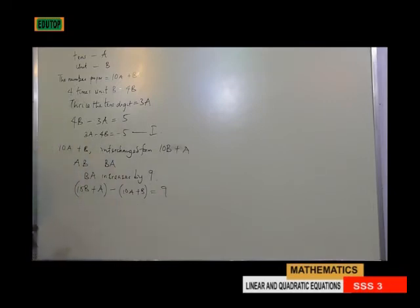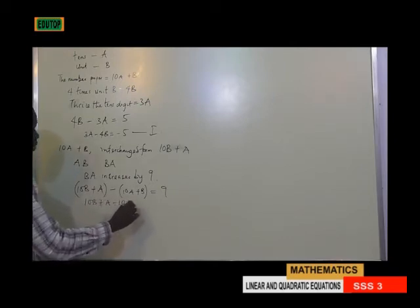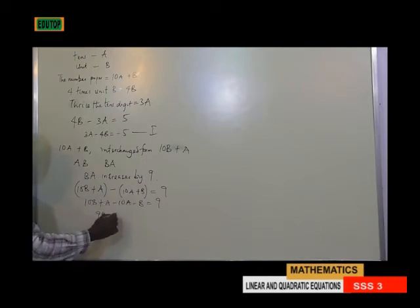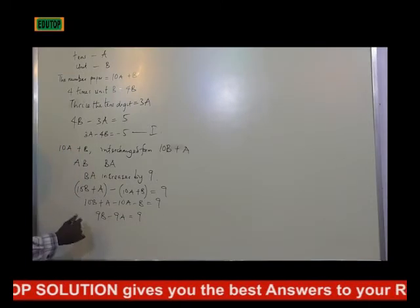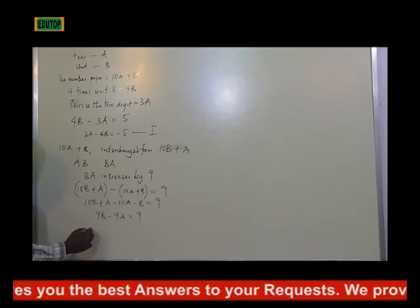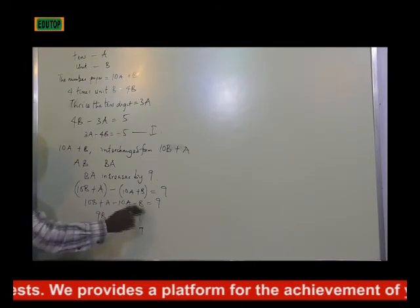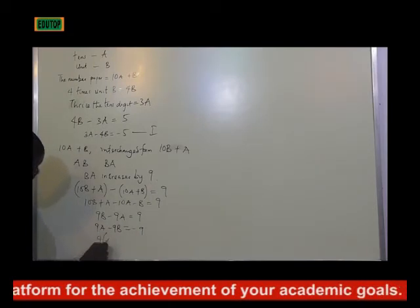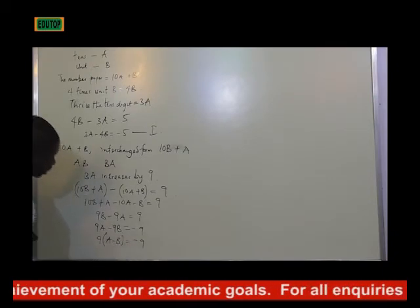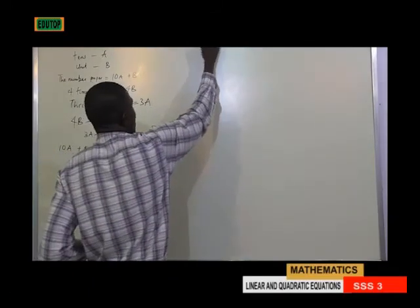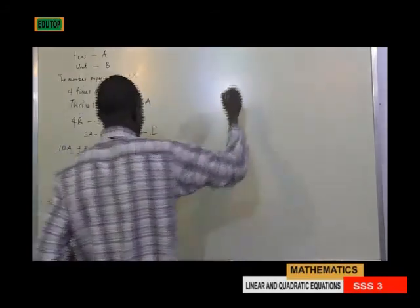Opening this up, I have 10B plus A minus 10A minus B equals 9. This gives 9B minus 9A equals 9. Rearranging to 9A minus 9B equals minus 9. Since 9 is common, dividing both sides by 9 gives A minus B equals minus 1. Let's call this equation 2.